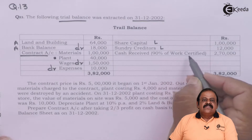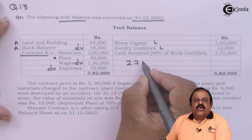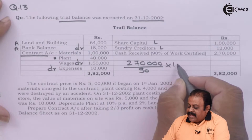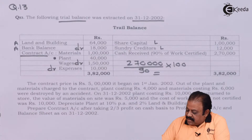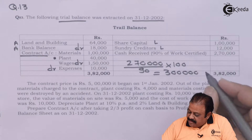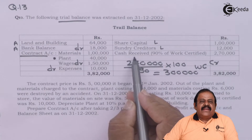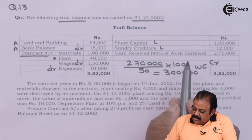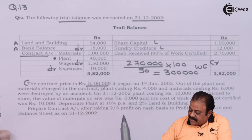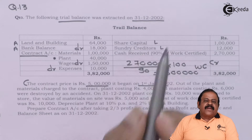Cash received is 90 percent of work certified — the amount given is 2 lakh 70,000. We can calculate work certified as: 2,70,000 divided by 90, multiplied by 100, which gives us 3 lakhs. So 3 lakhs is the amount of work certified, and this will be credited to the contract account. The contract price is rupees 5 lakhs, started on 1 January 2002, with the trial balance date being 31 December 2002 — a complete period of 12 months.